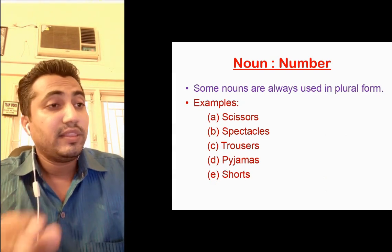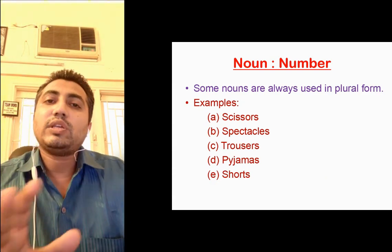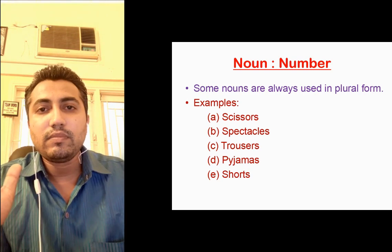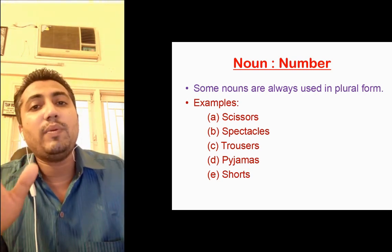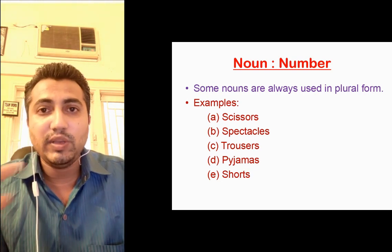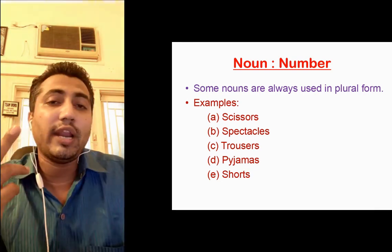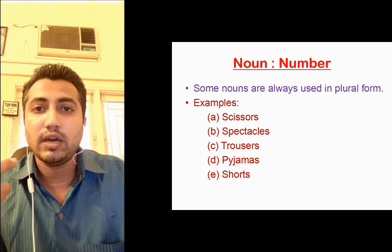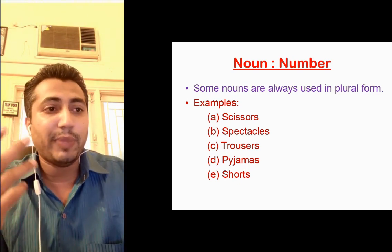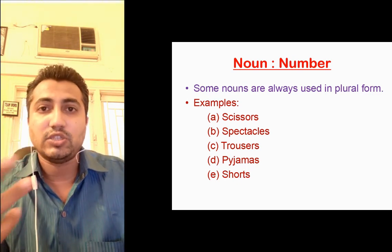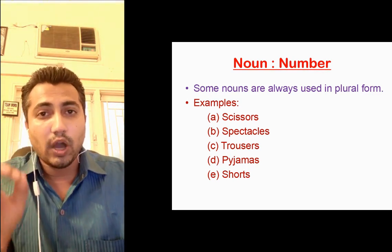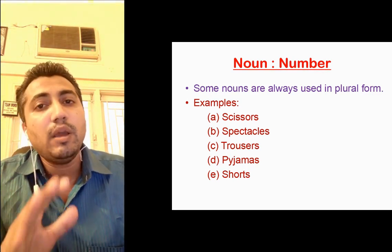There are some nouns which are always in plural form — they are never singular. For example: scissors (we don't say 'scissor', we say 'scissors' or 'a pair of scissors'), spectacles, trousers, pajamas, shorts. All these are nouns which are always in plural.